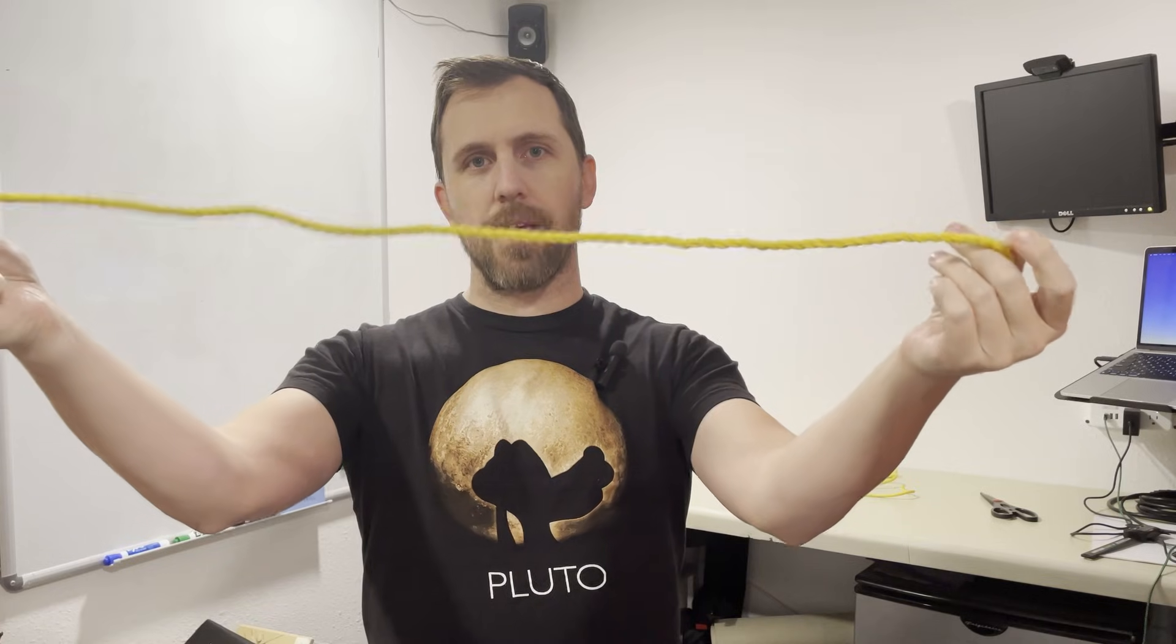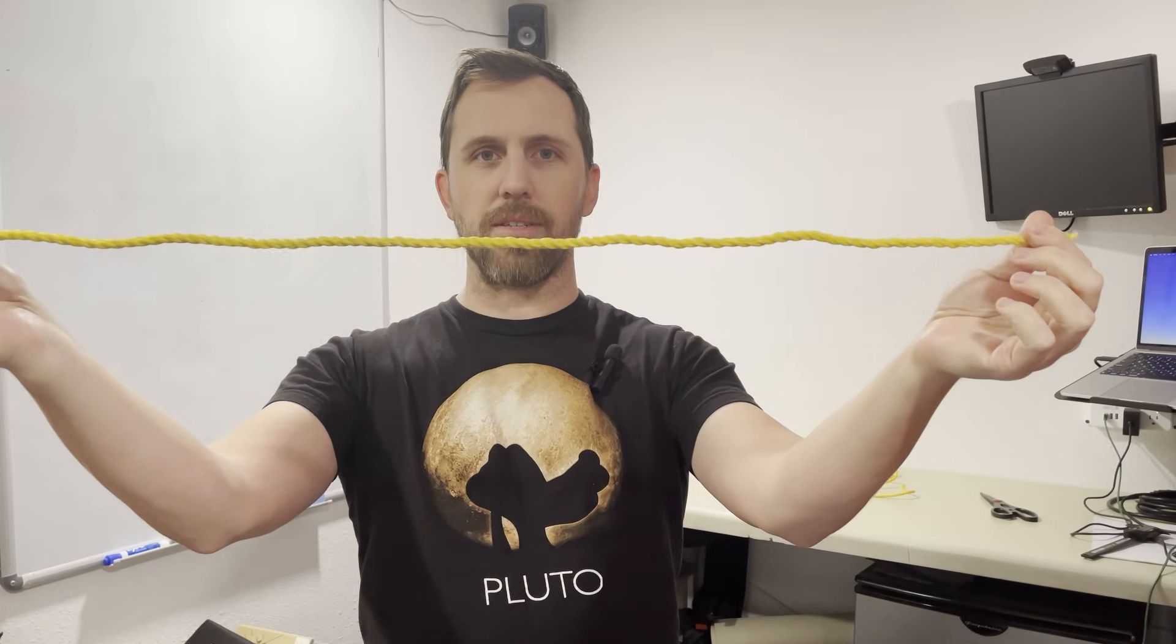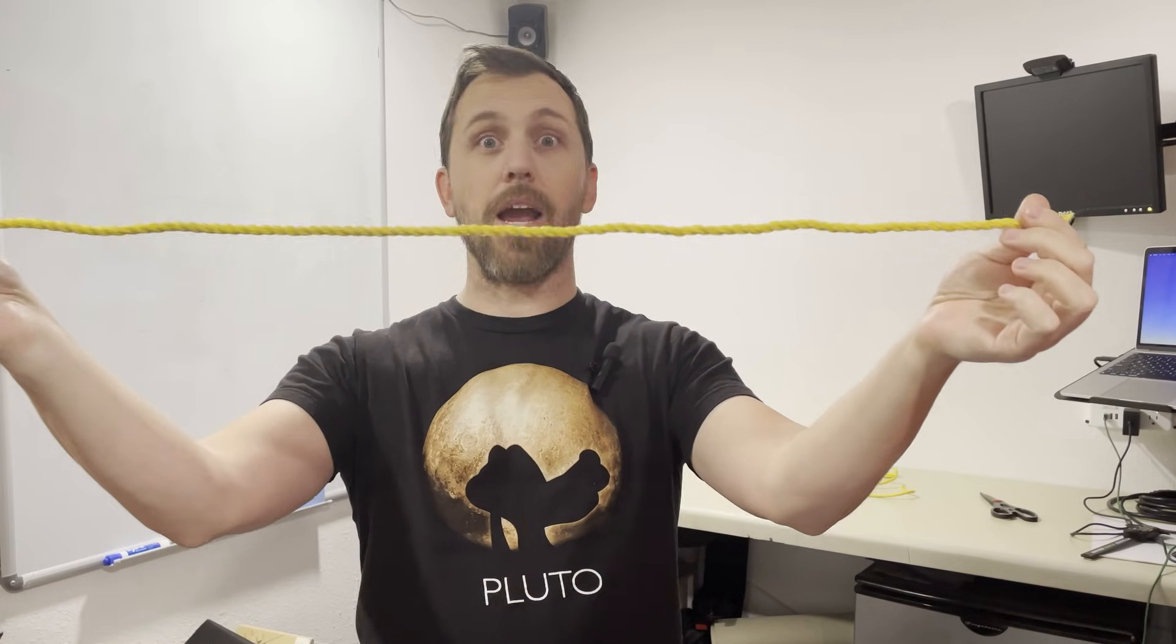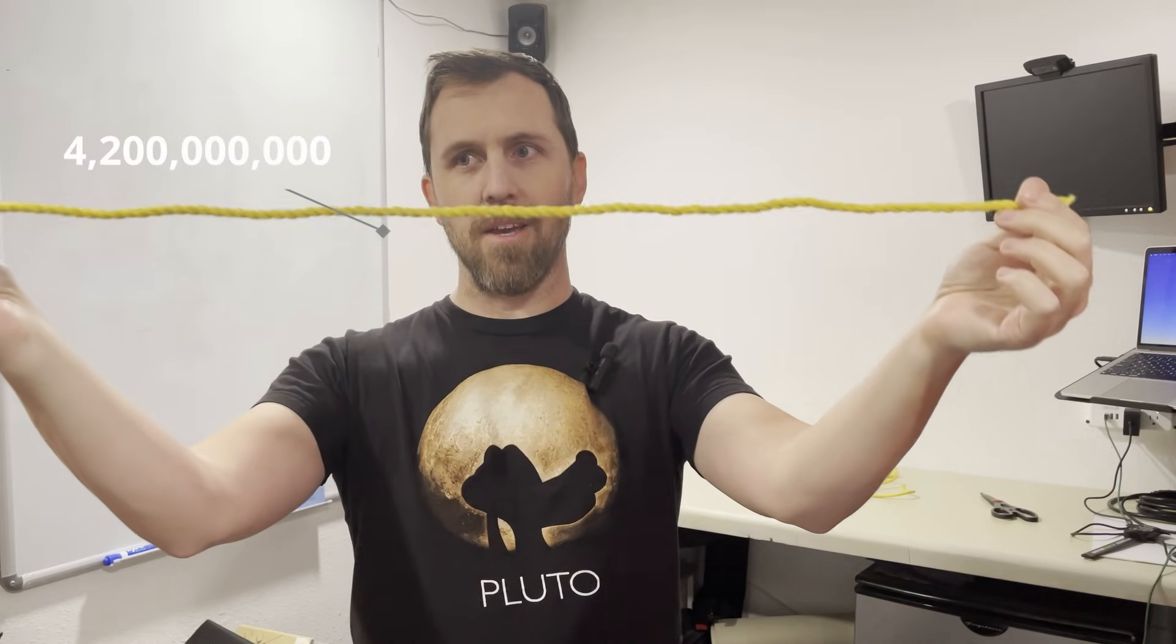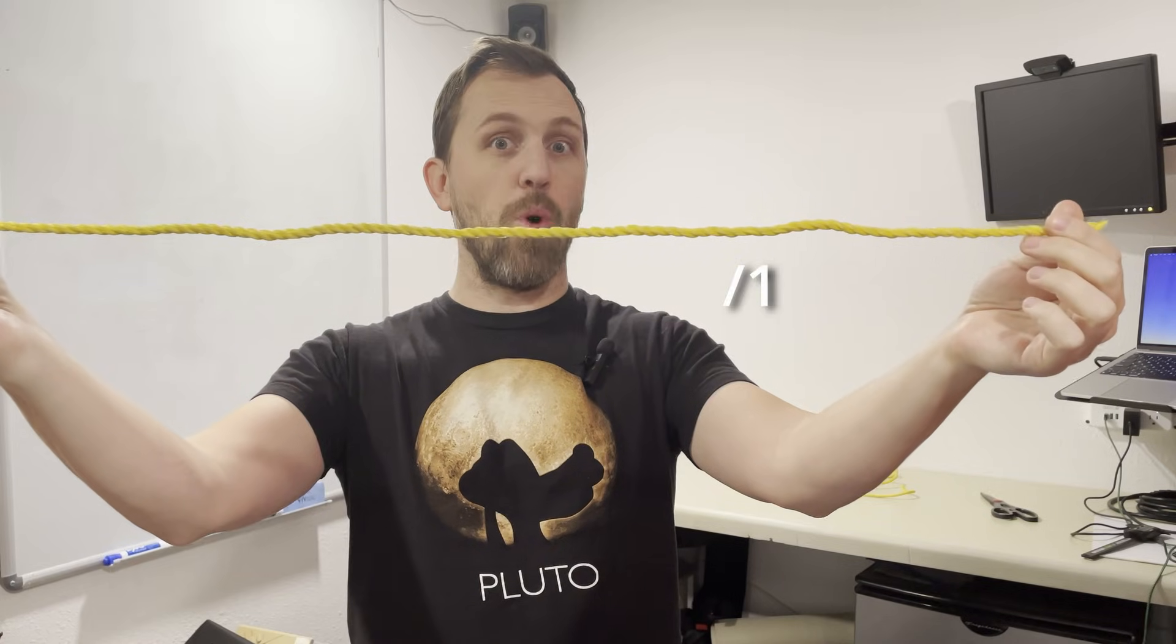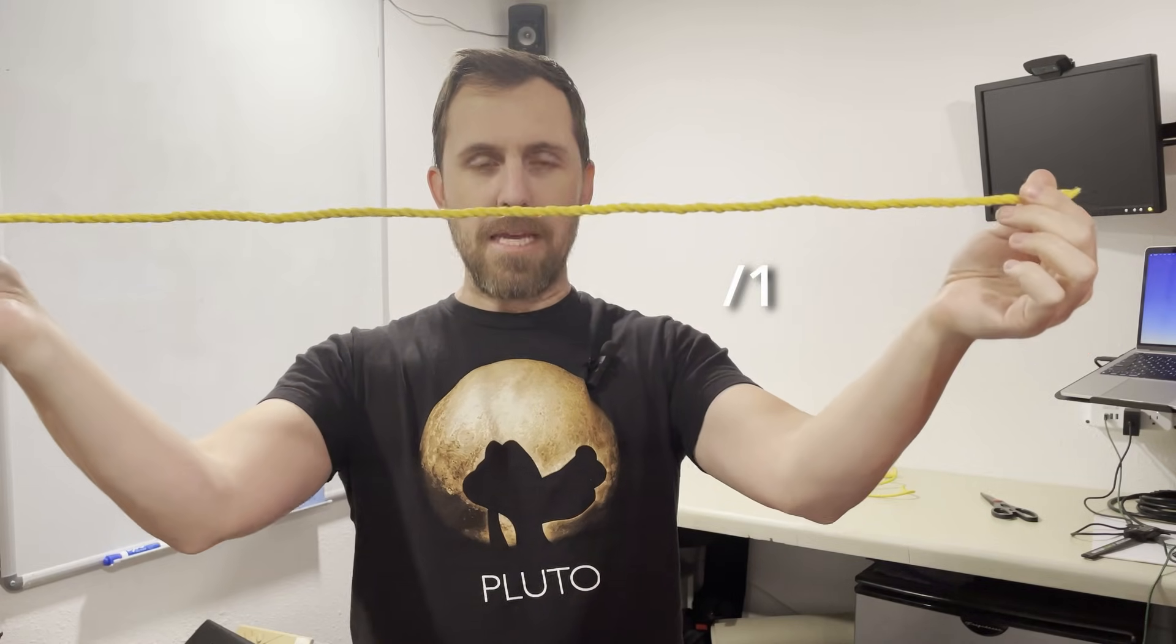Now let's pretend this rope is every IPv4 address that we have. The entire internet. All 4.2 billion IP addresses. This is what we would call a slash 1. It's one piece.